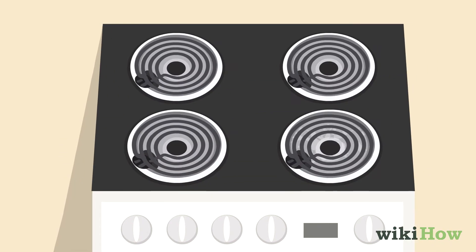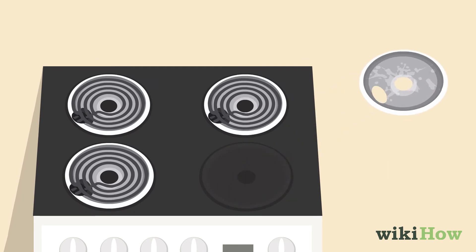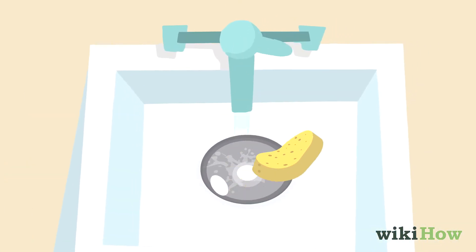To clean the drip plates underneath the coils, unplug the coils, then remove the drip plates and wipe them down with a wet, soapy sponge.